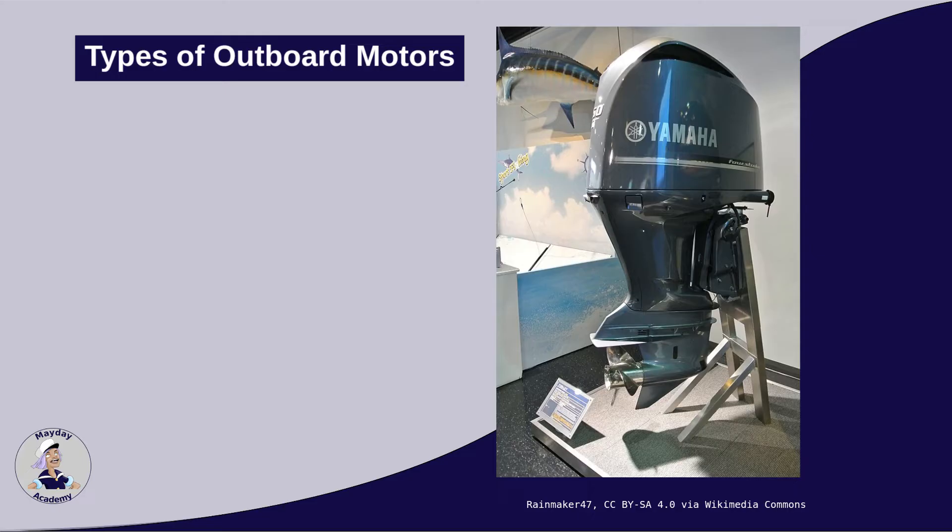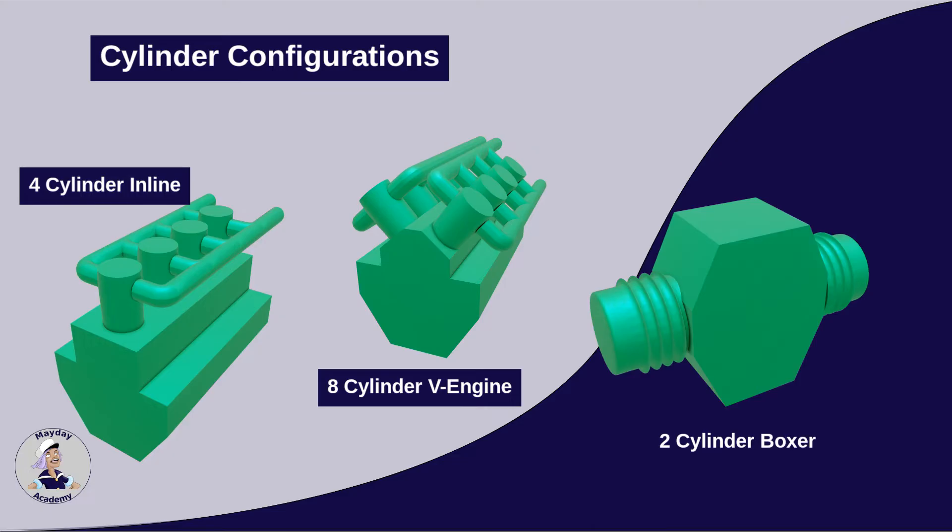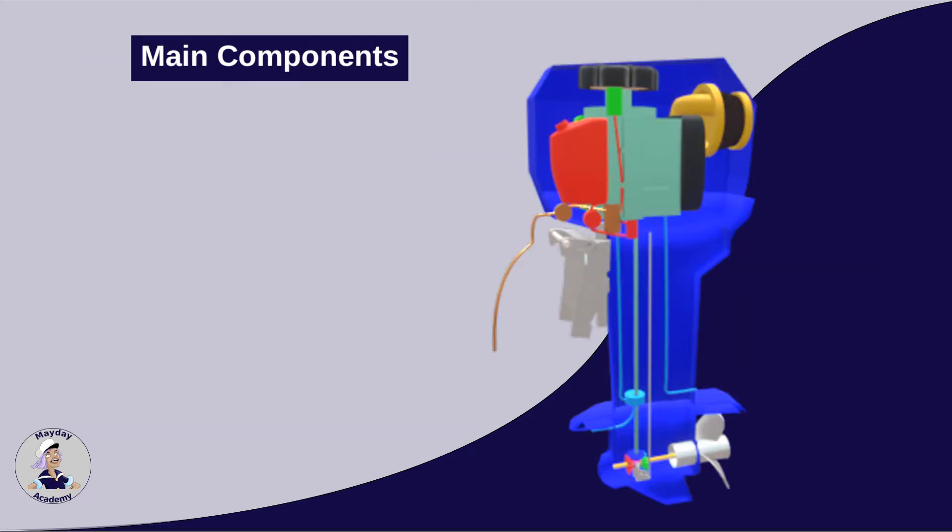The cylinders can be arranged in various configurations, including inline, V and boxer engines. The number of cylinders and the arrangement have a significant impact on the power, smoothness and weight of the engine. Let us now have a look at the main components of an outboard motor.